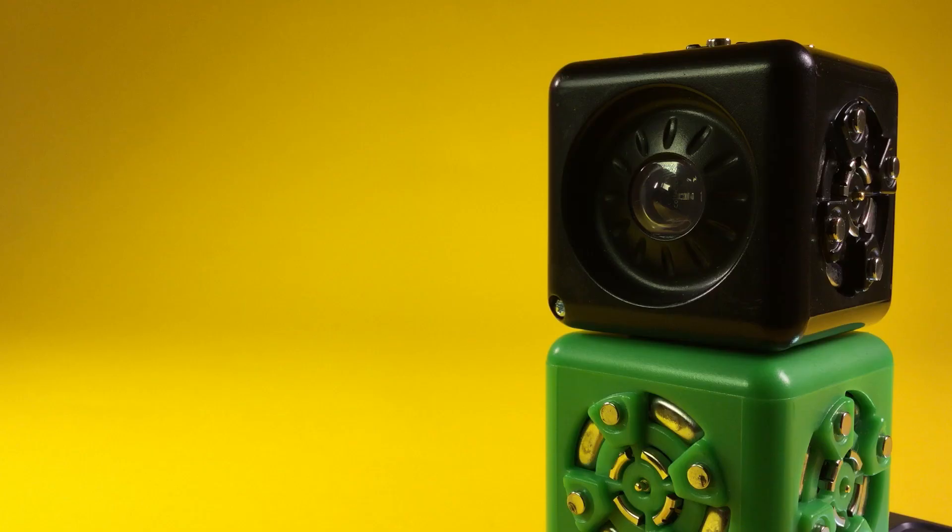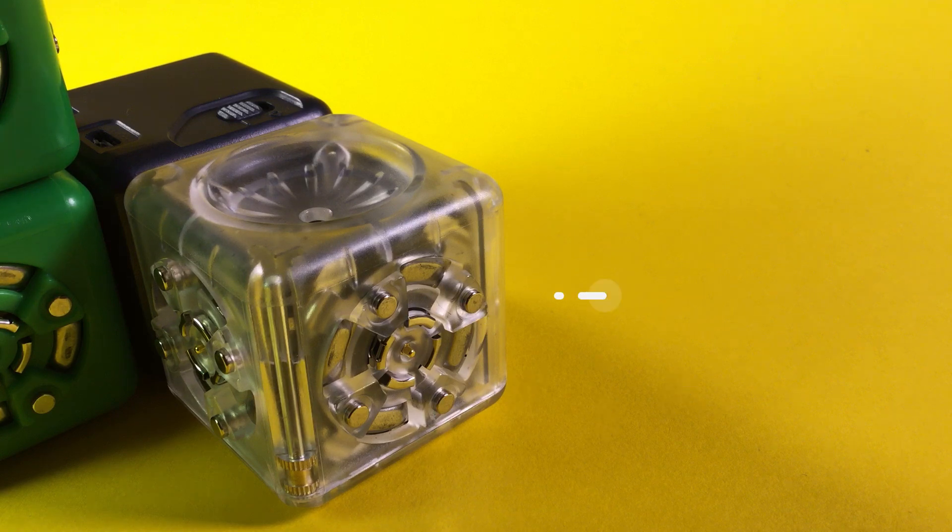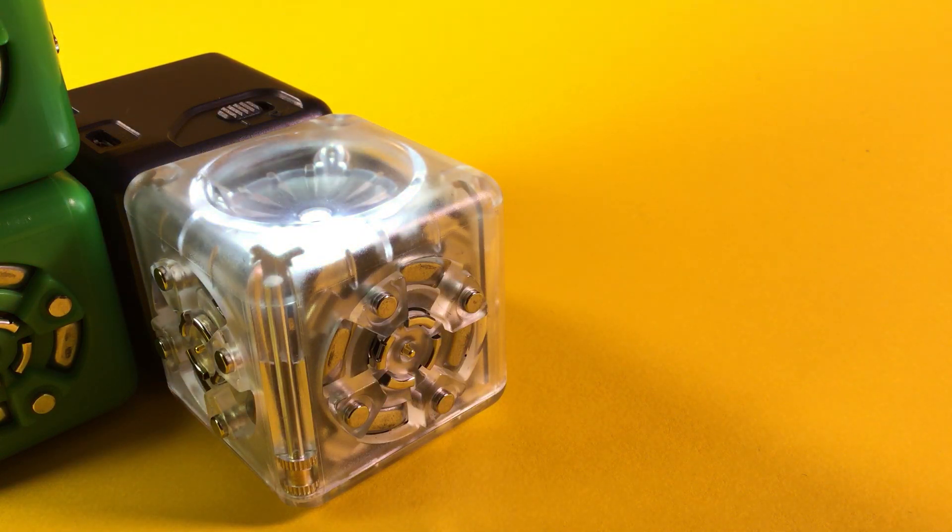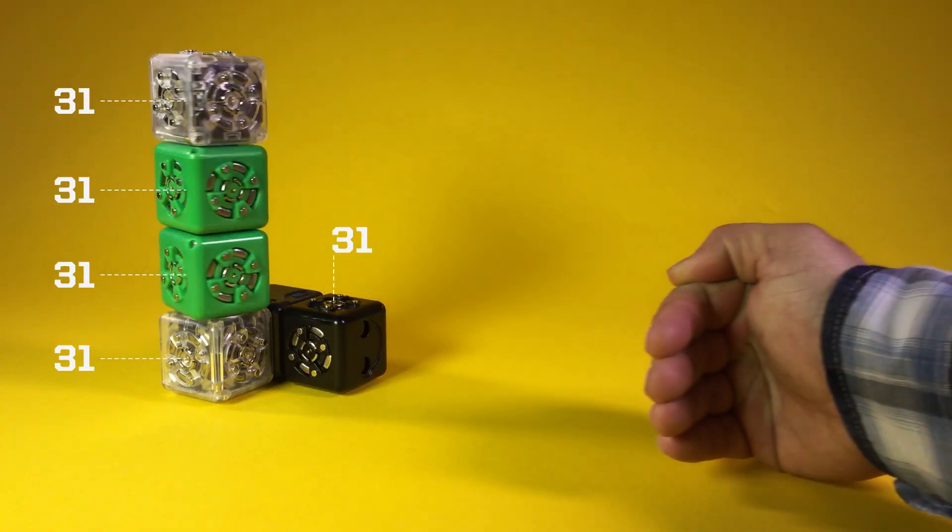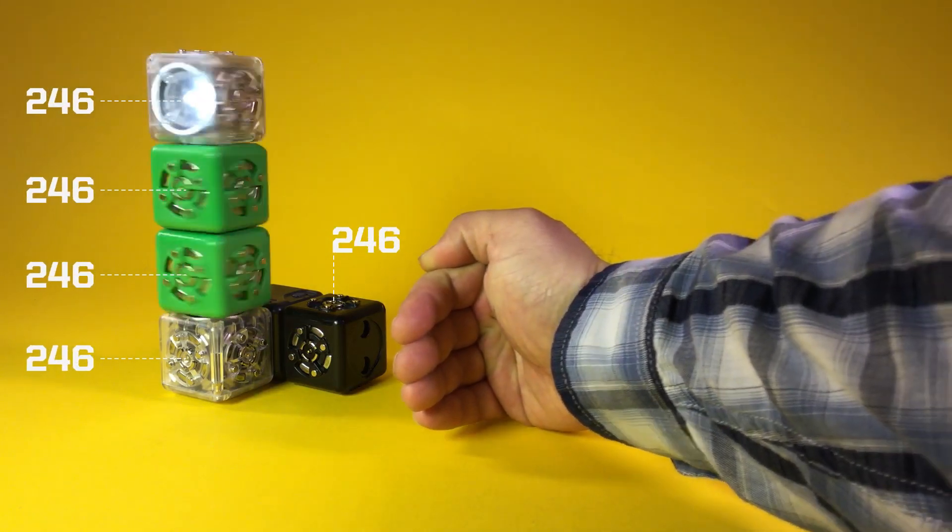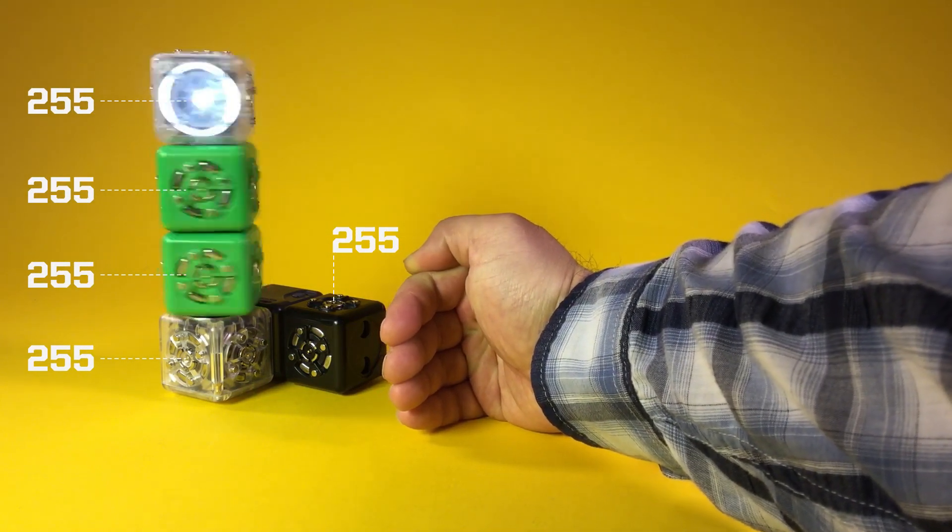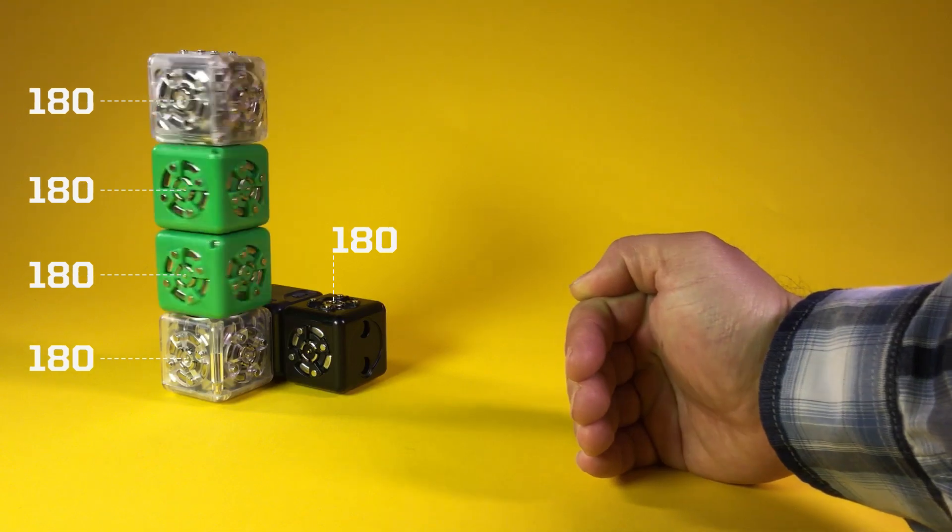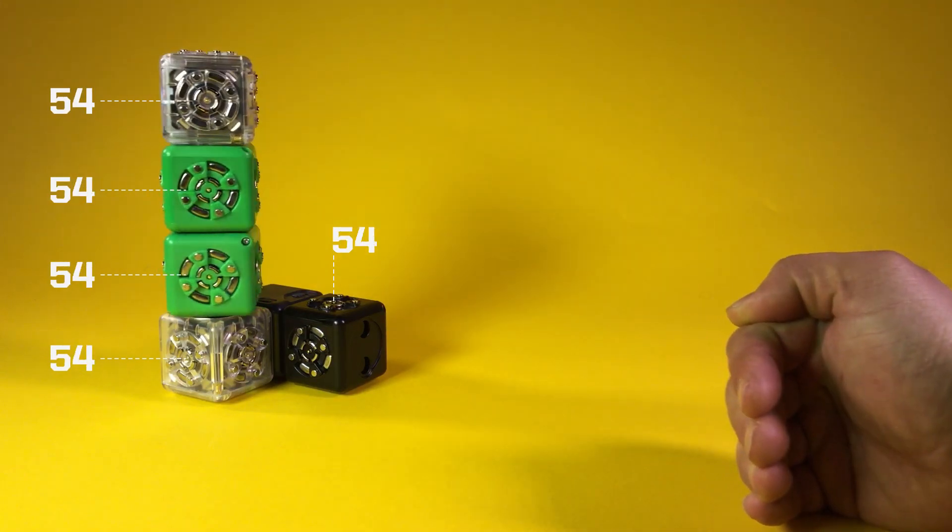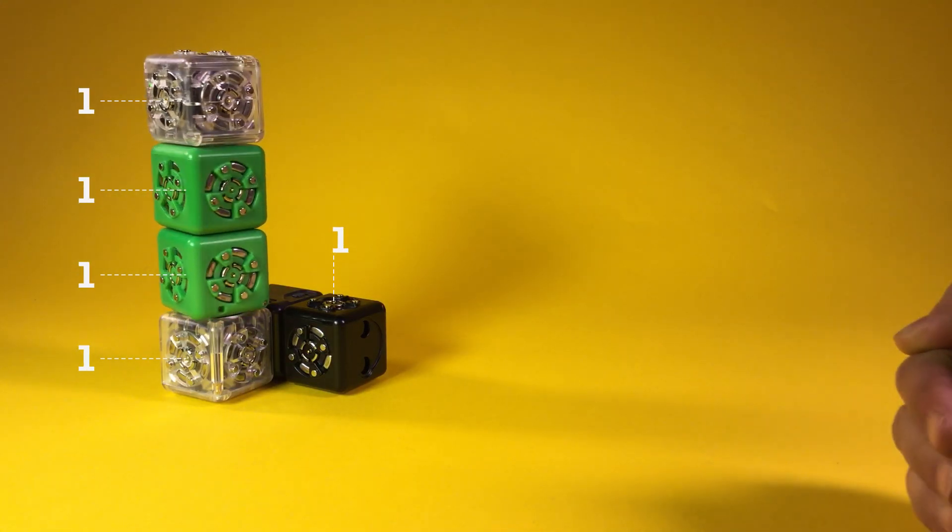Number 7. Each black sense cubelet detects some property of its environment and turns it into a number. Act cubelets take the numbers they receive and turn them into action. Think of the number as hopping or flowing from one block to the next. Numbers are flowing through each cubelet moving from sense to act blocks all the time. These numbers are what makes the robot behave the way it does.